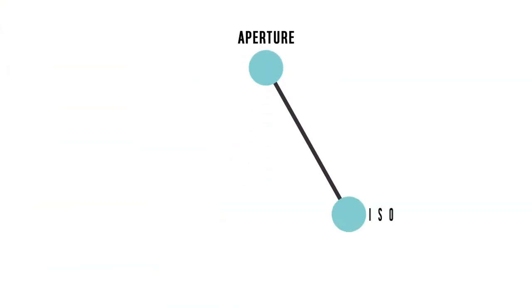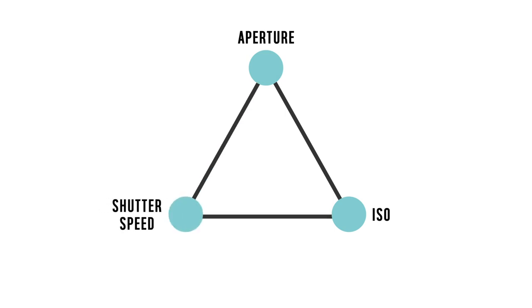There are three fundamental factors that are important for every photographer to understand, all of which affect the amount of light that goes into the camera and how the camera performs. These are: one, the aperture; two, the ISO number; and three, the shutter speed. They all work in tandem with each other and are therefore often referred to as the exposure triangle.